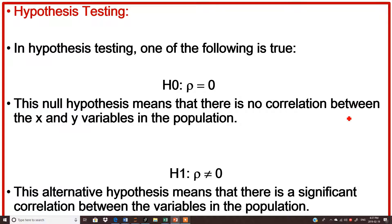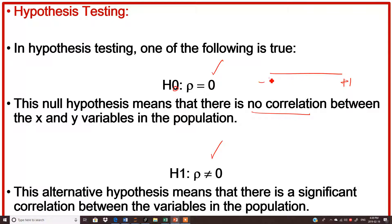Now here is the hypothesis testing. In hypothesis testing, one of the following is true. The null hypothesis H₀ states that the population correlation ρ equals 0, meaning there is no correlation between X and Y. The alternative hypothesis H₁ states that ρ is not equal to 0, meaning there is a significant relationship between the variables. I say I do not agree that there is no relationship — I believe there is one.